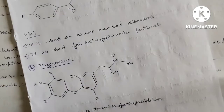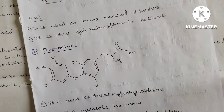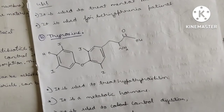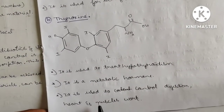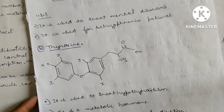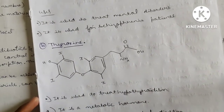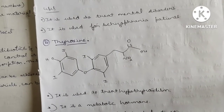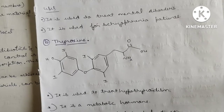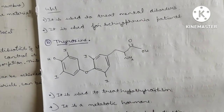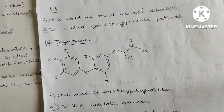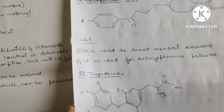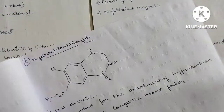Thyroxine: You are familiar with this structure. Used to treat hypothyroidism; it is a metabolic hormone that controls digestion and heart and muscle function. In the examination hall, if you cannot draw the diagram, write the uses — don't skip. You have 15 to 20 days before your examination, so practice these structures.